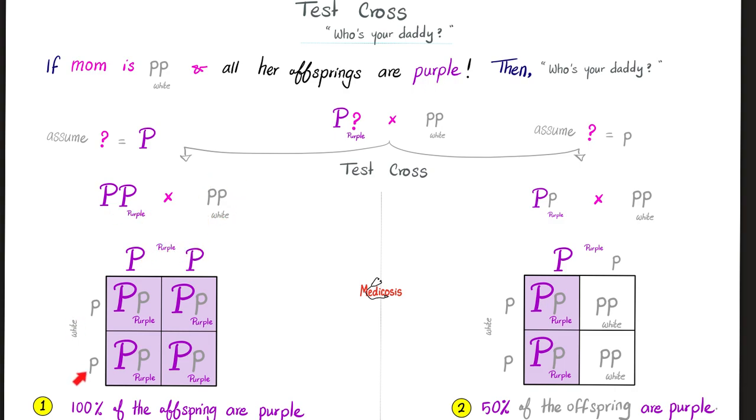And then, bingo, you match the mom, which is known, with the dad. Once this way, and once this way. And you see what happens. See here? 100% of the offsprings are purple. Does this match the criteria? Yeah, it matched what I told you. How about here? Only half of the offsprings are purple. The other half are Karens.